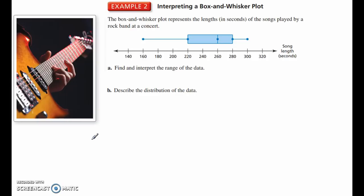Here's that problem, the length of rock songs played at a rock band concert. All right, the shortest song is 160, the longest is 300 seconds. Find and interpret the range. So, we're going from 160 to 300. Subtract those two to give you a range of 140 seconds. What does that mean? Because it says interpret, so that means that these songs varied in length by no more than 140 seconds.